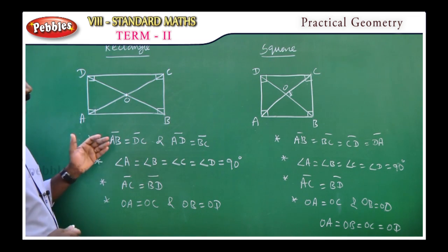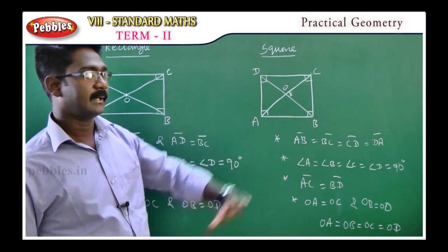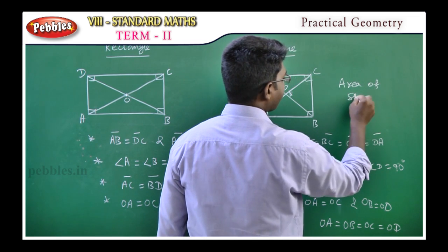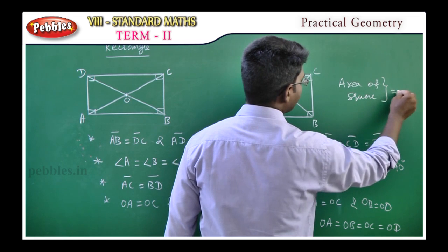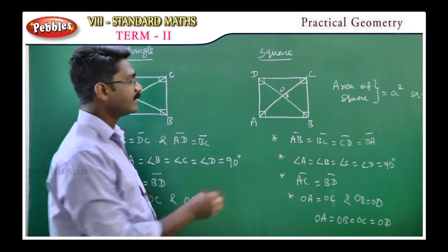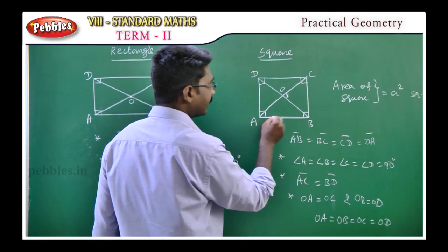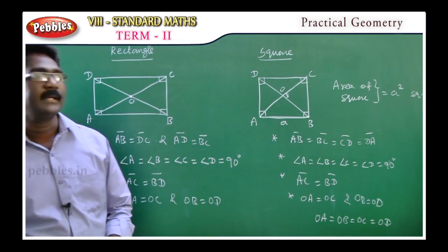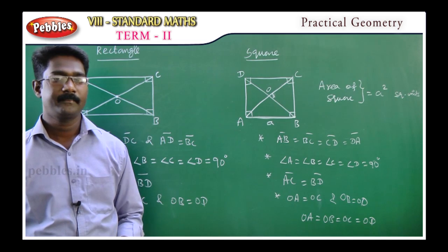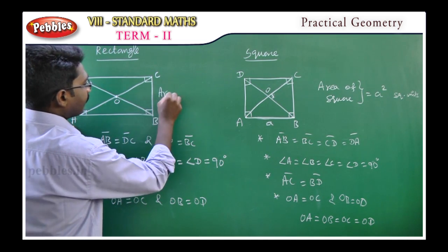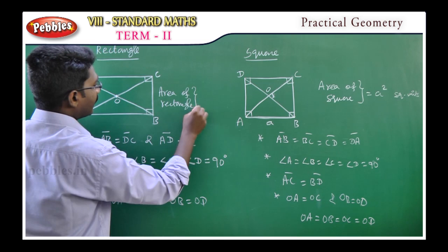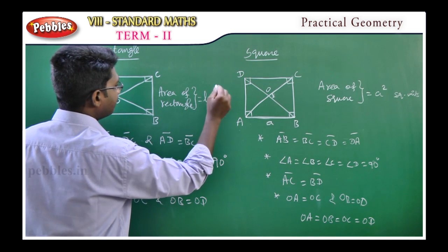Next, what is the area of a rectangle? What is the area of a square? Area of square is equal to a squared square units. Area of rectangle is equal to L into B square units.